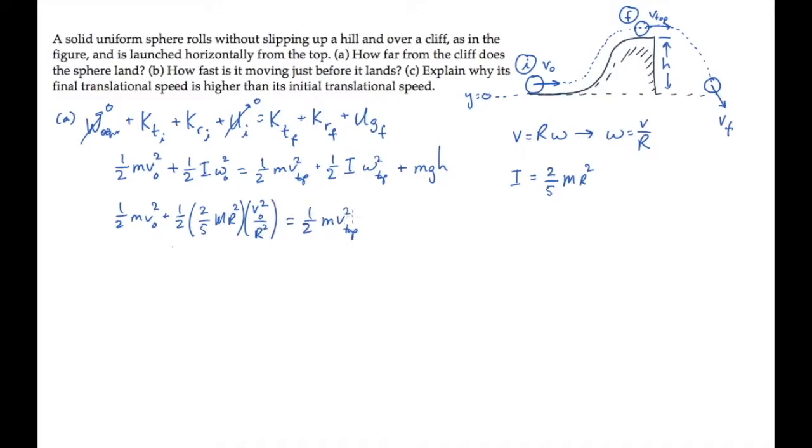From this equation, we need to solve for v top, the translational speed of the ball at the top of the hill. So we can simplify it by canceling the mass m from each term, and then multiplying each term by two to get rid of all these one-halves, picking up a two in front of the potential energy term. And finally, notice that the r-squared terms cancel from the rotational kinetic energies.